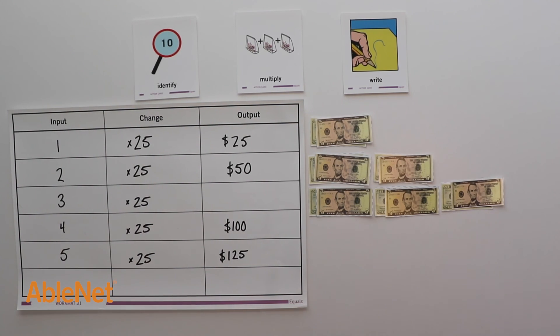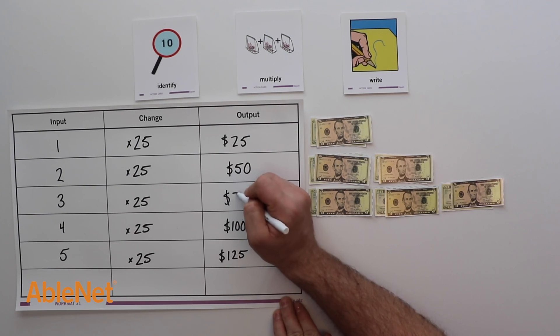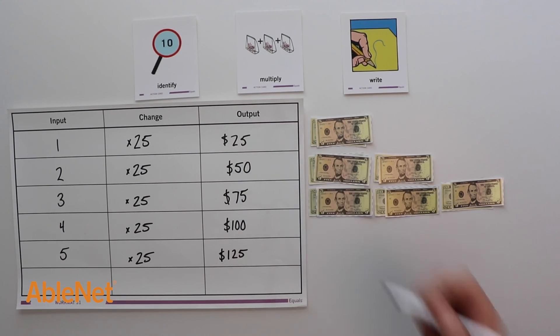Now I can add 25 plus 25 plus 25 equals 75. The cost of three cases of sauce is $75.